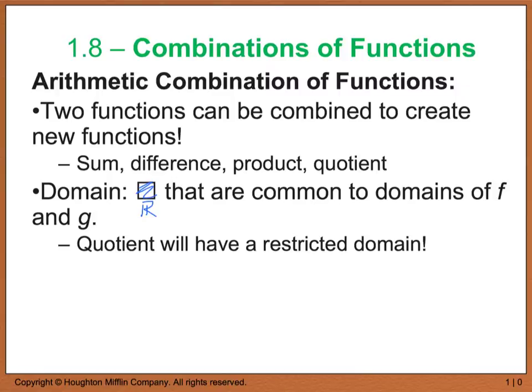Now when we're dealing with the domains, the domain of this combination of functions is going to be all real numbers that are common to the domains of both the functions f and g. The only discrepancy with that would be that when we're dealing with a quotient, we will have a restricted domain because we cannot have that denominator go to zero.